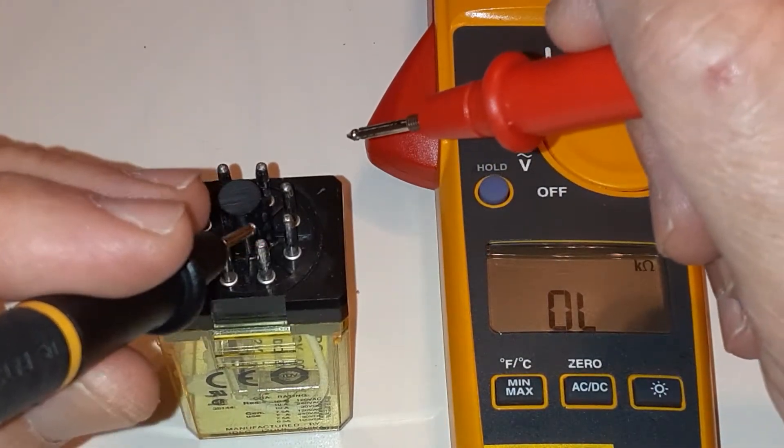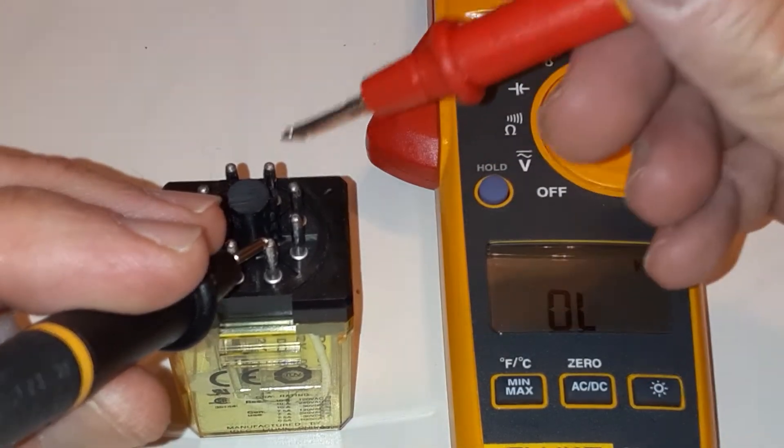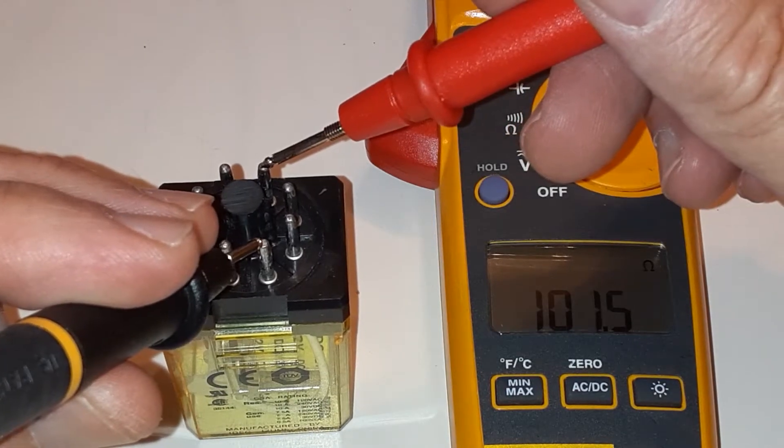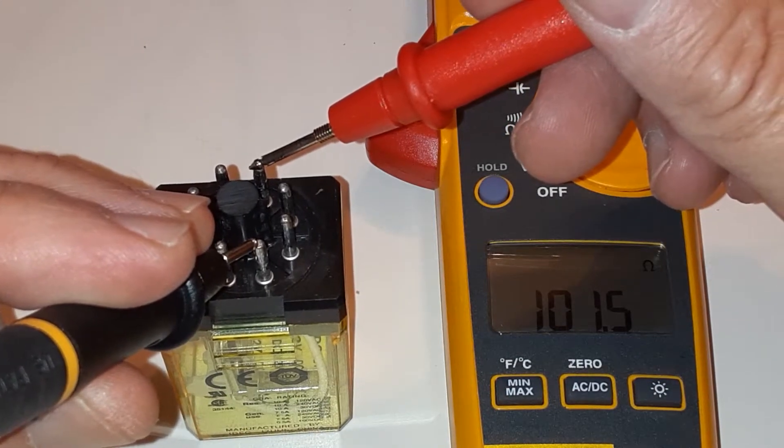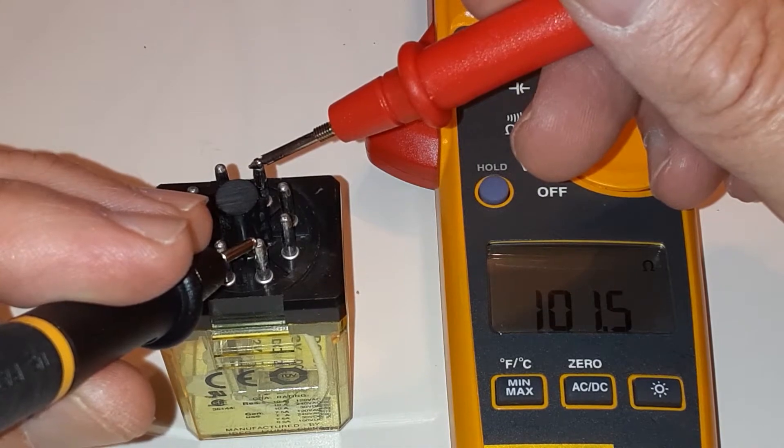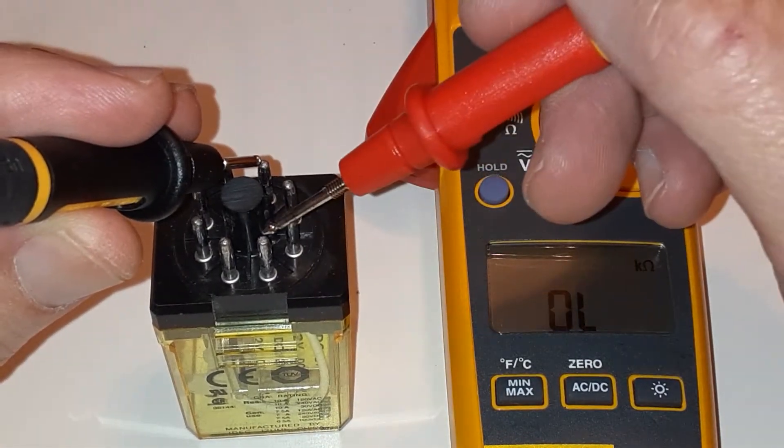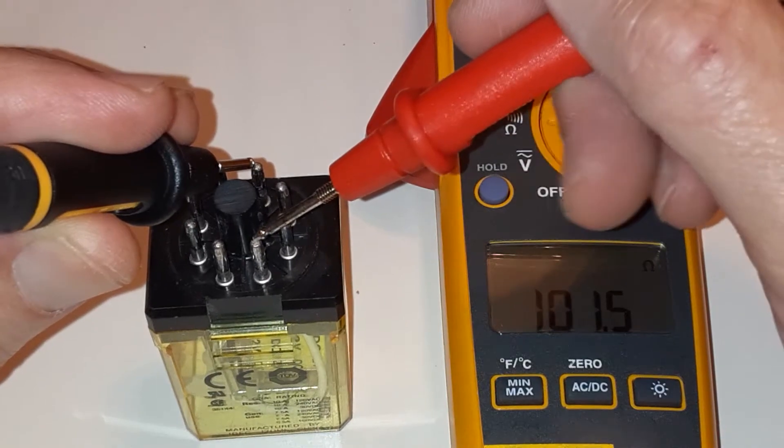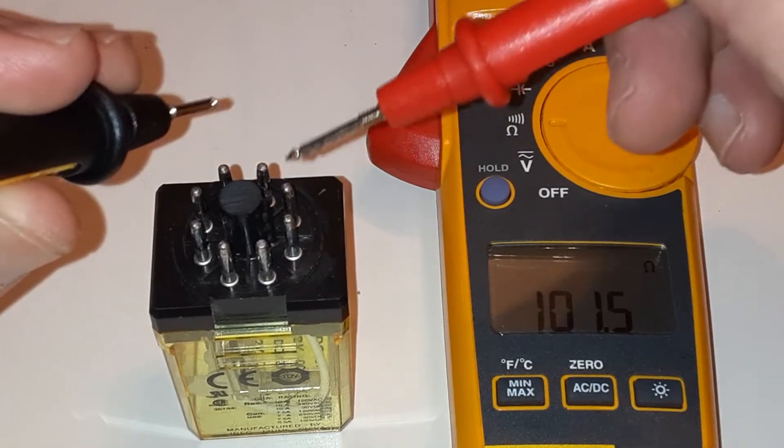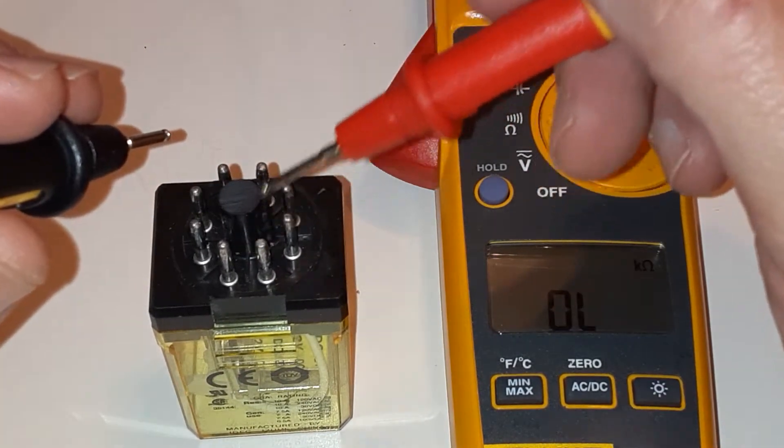Let me go across those terminals and see if I get a reading. 101.5. So that's coil resistance. Let me switch the wires around to show that it doesn't matter which way I take the measurement. 101.5. That's my coil connection right there.